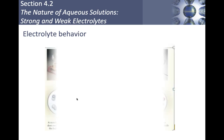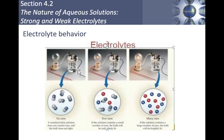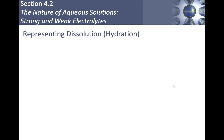Looking at electrolyte behavior: a strong electrolyte shows many separated positive and negative ions. A weak electrolyte shows some ions but many molecules still stuck together. A non-electrolyte shows no ions at all — those molecules are just floating around in water without breaking apart. That's what you need to be aware of when looking at electrolytes.